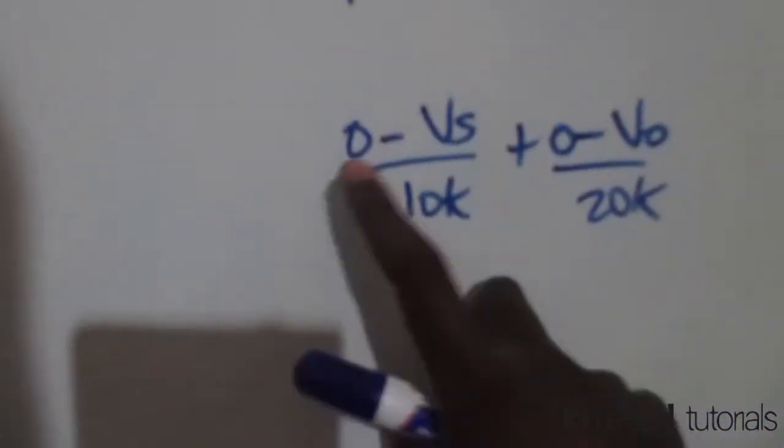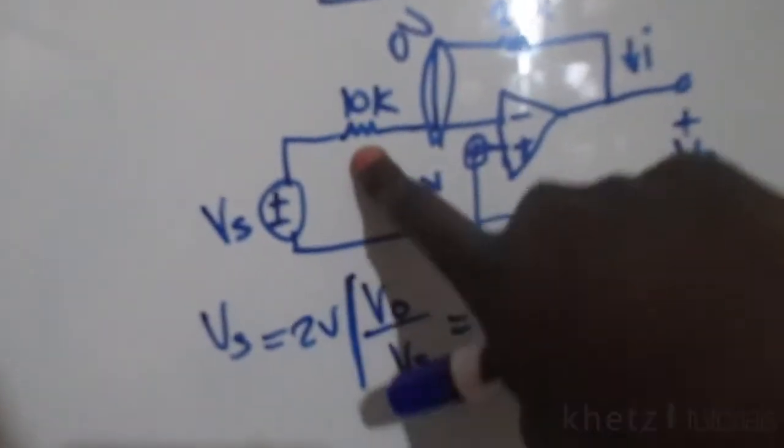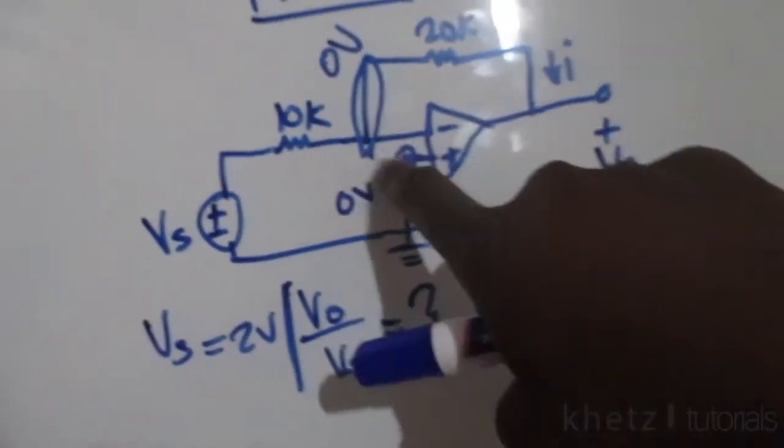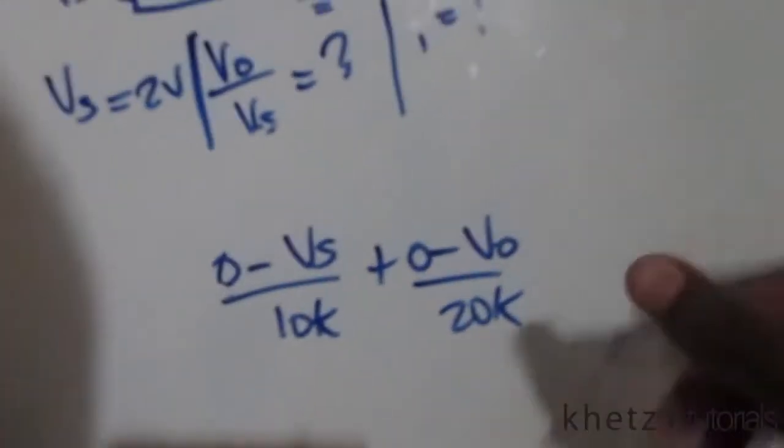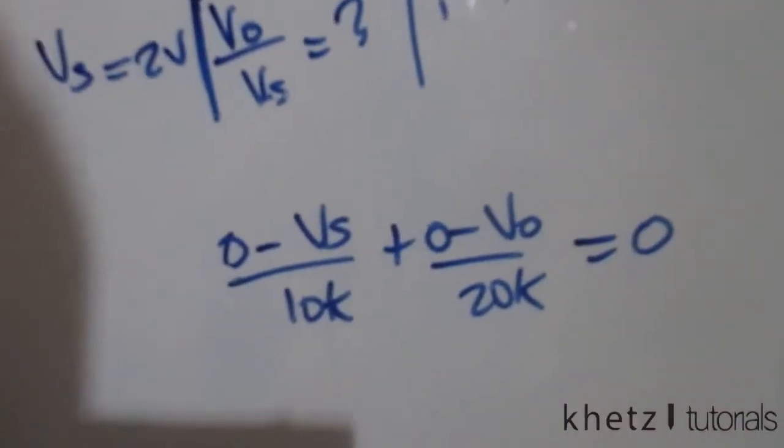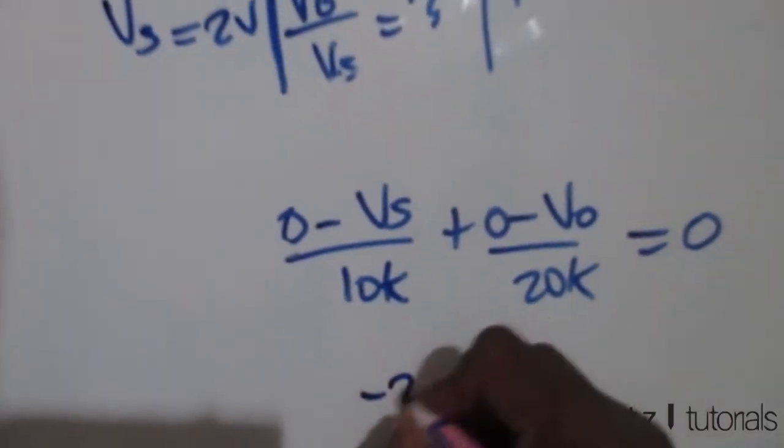I'm gonna have zero subtract Vs divided by the resistor which is in that path, as well as zero subtract Vo divided by the resistor in that path. That is exactly what I have, equal to zero. Multiplying through by 20k, you're gonna have negative 2Vs negative Vo is equal to zero.